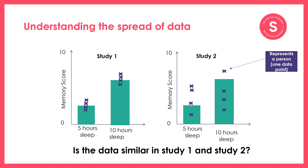What I've now added to this bar chart is the variance — the spread of data. I've added a data point representing each person that's taken part in the study. Each purple cross represents a person — it is one data point. You can see that in each group there are four participants. Now looking at how the data is spread out around the mean, around the average — do you think the data is similar in study one and study two?